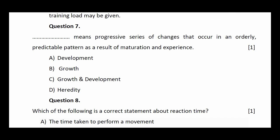Question number seven: blank means progressive series of changes that occur in an orderly, predictable pattern as a result of maturation and experience. Options: development, growth, growth and development, periodicity. The answer is development.